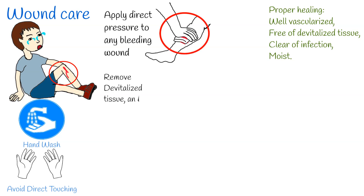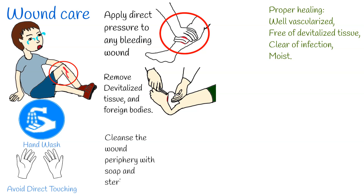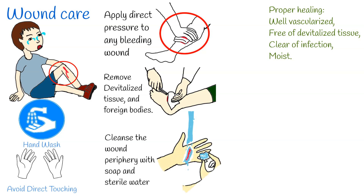Step 2: Examine wounds for gross contamination, devitalized tissue, and foreign bodies. Step 3: Remove constricting rings or other jewelry from the injured body part. Step 4: Cleanse the wound periphery with soap and sterile water or available solutions, and provide anesthetics and analgesia whenever possible.